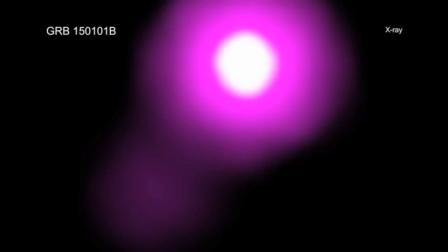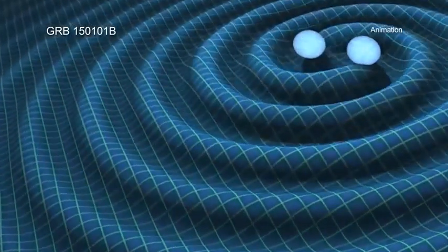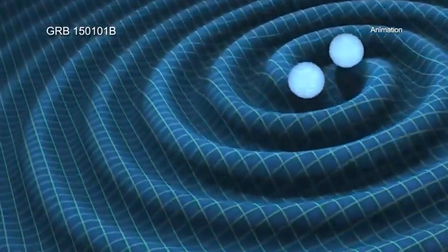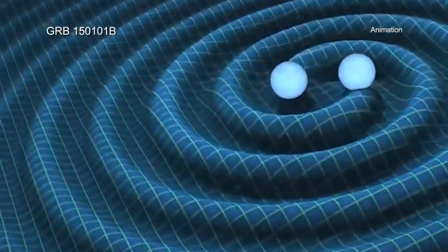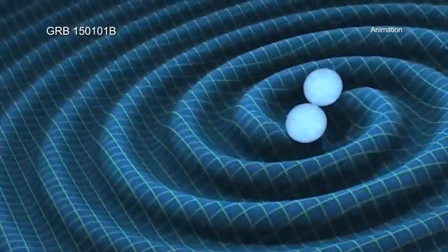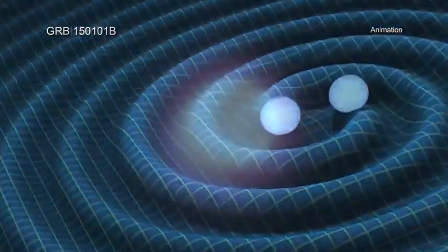This detection and follow-up observations show that this new object shares remarkable similarities to the neutron star merger and gravitational wave source discovered by the Advanced Laser Interferometer Gravitational Wave Observatory and its European counterpart, Virgo, in 2017, known as GW170817.